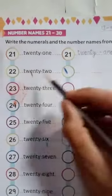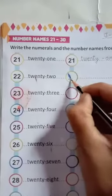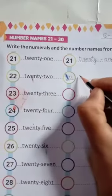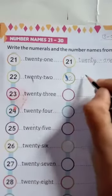T-W-E-N-T-Y-O-N-E, 21. Now, next is 22. We will write here numerals 22, 22. After that, we will write here number names of 22.